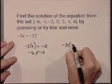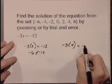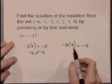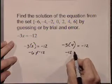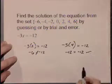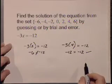We'll substitute 4 into the x position and simplify the left-hand side. -3 times 4 gives us -12. We've found our choice through the trial and error method.